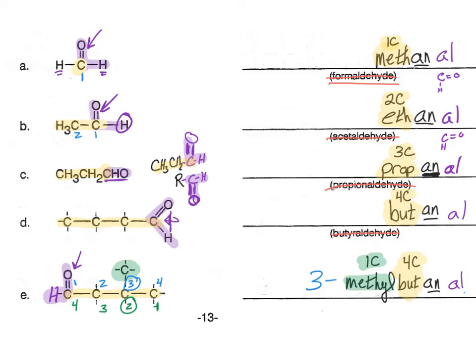Now let's look at how to draw the aldehydes from a given name. We'll start with compound A. As usual, we're going to look at the end. We see that there's an aldehyde. Everything else is single bonded. And we're going to see the pent, which tells us that there are five carbons in the main chain.